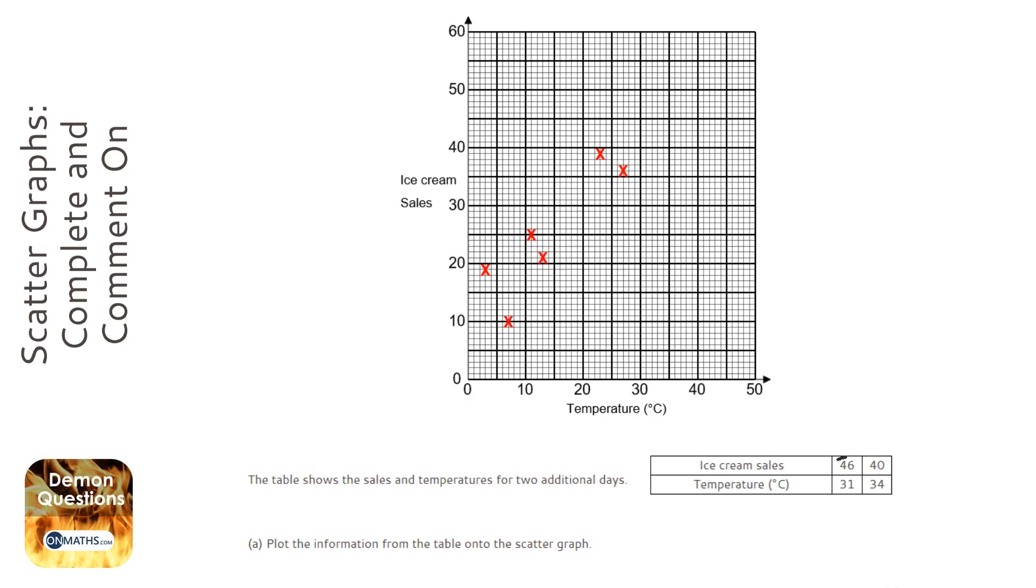The ice cream sales are 46, which is here on the scale, and the temperature is 31, which is here on the scale. Just check that you're looking at the scale correctly. We're looking at about here.